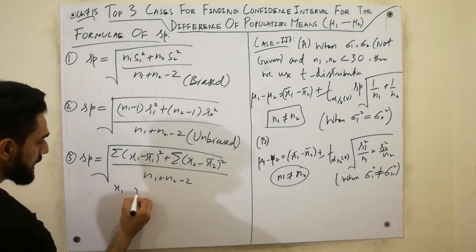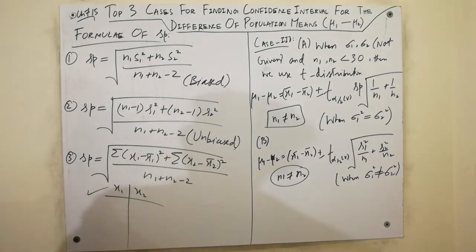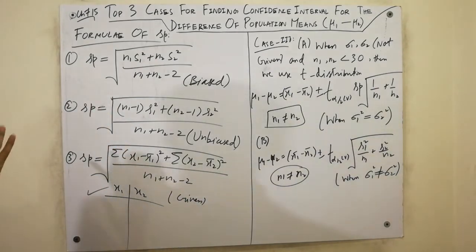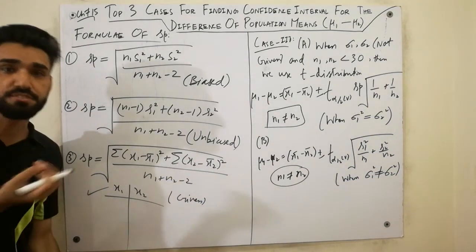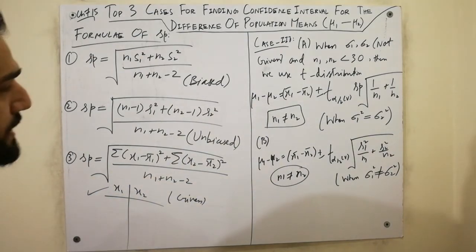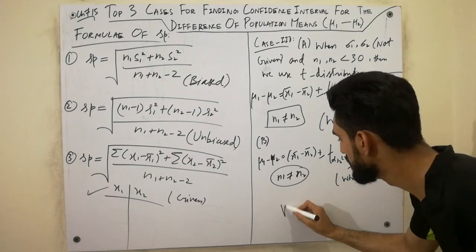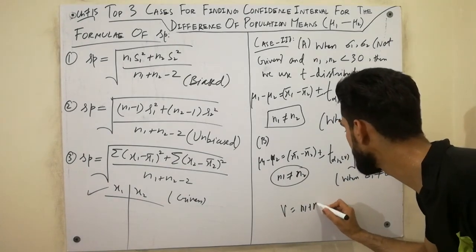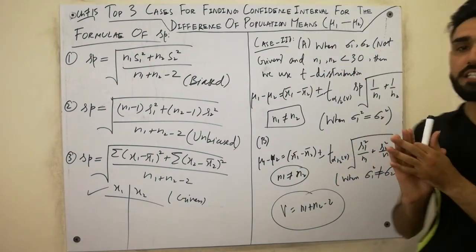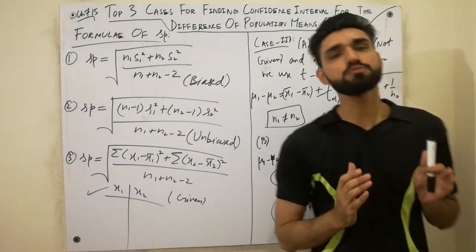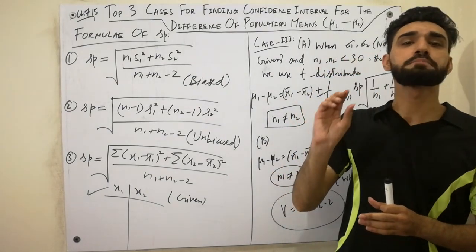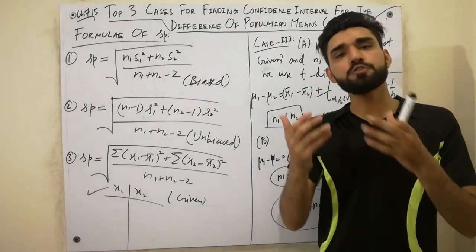The Sp formula using raw X1 and X2 values is very important for solving confidence interval problems. Also, the degree of freedom V equals n1 plus n2 minus 2. I hope the three cases and the Sp formulas are now clear. Please like the video, subscribe to my YouTube channel, and press the bell icon to get notifications for new videos. Goodbye!